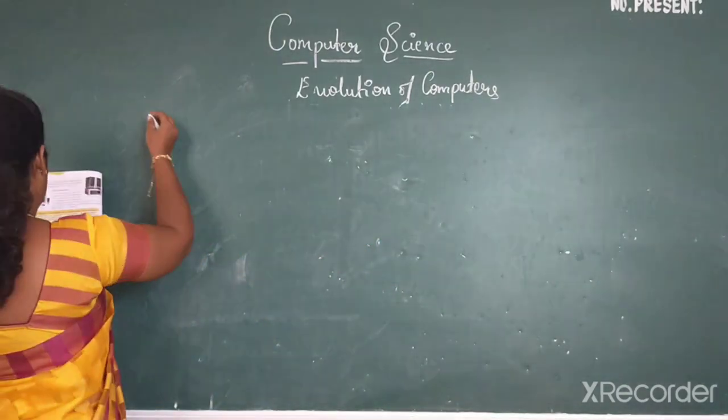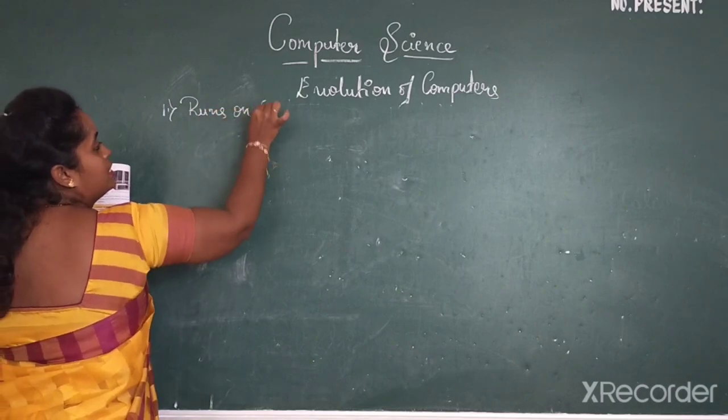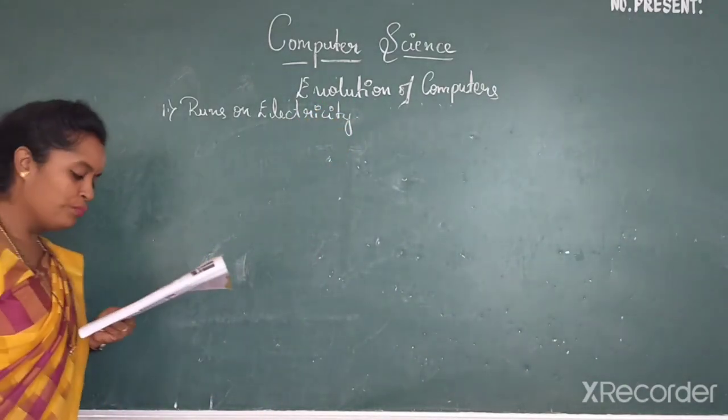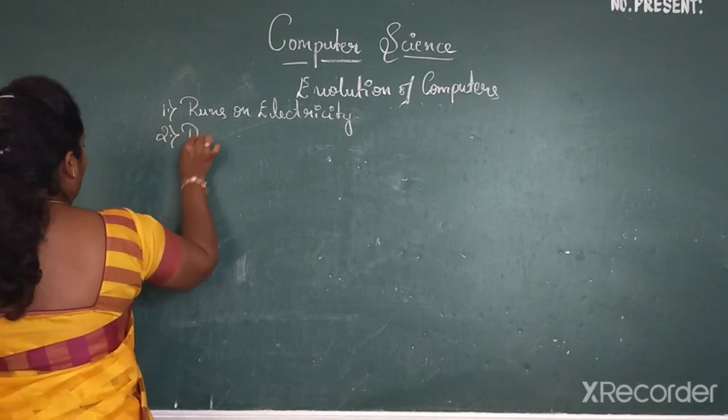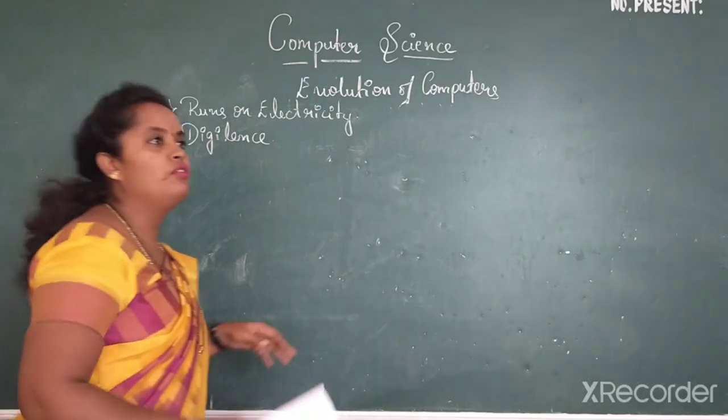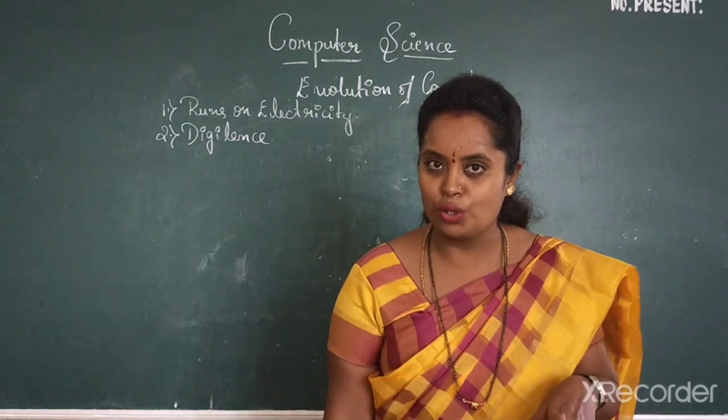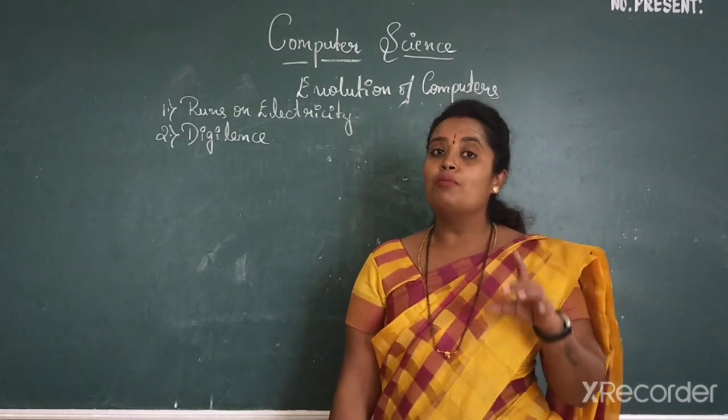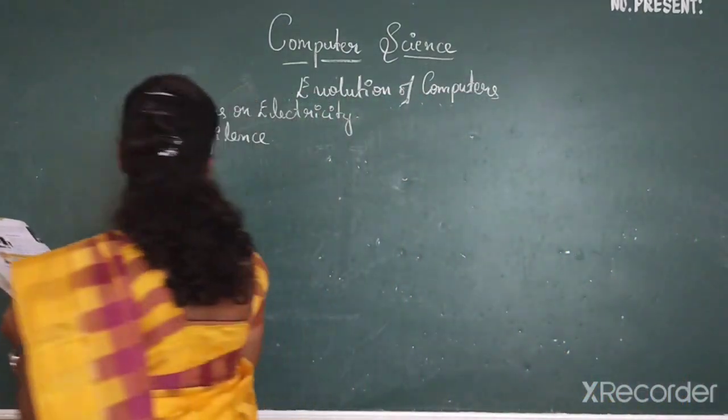We will be moving on to the characteristics or the uses of the computer. The first one is, it runs on electricity. Of course children, it should run on electricity only. It is an electronic machine, so it should run on electricity. Then the second one is quality of diligence. What is the word diligence? Diligence is, computer keeps on working for a long time. Computer doesn't get tired. The maximum time also it runs. That's the quality of a computer.